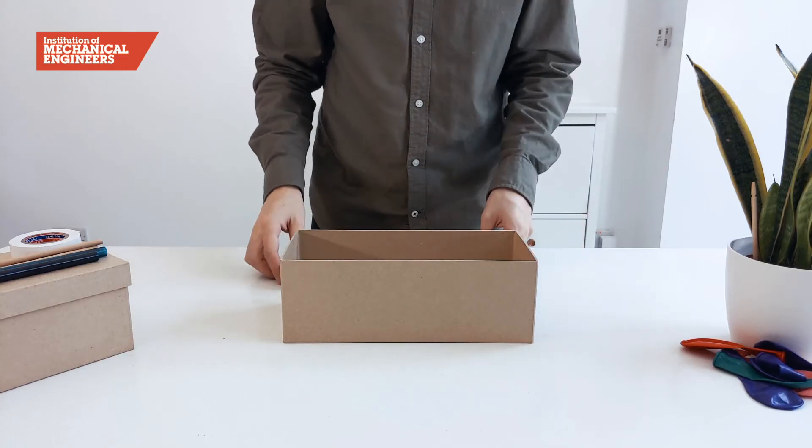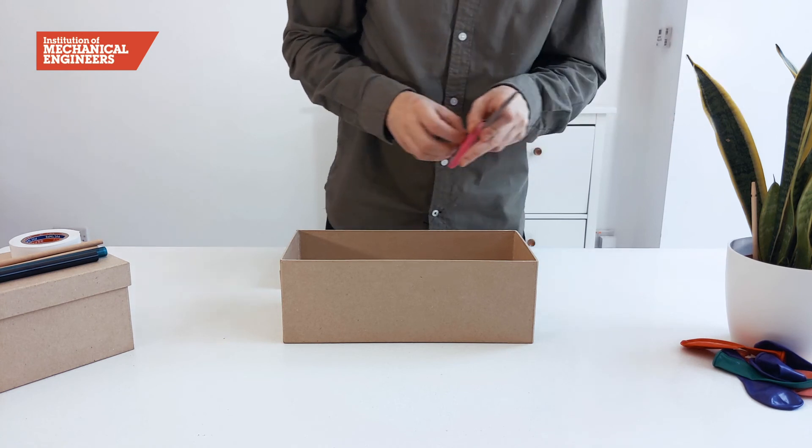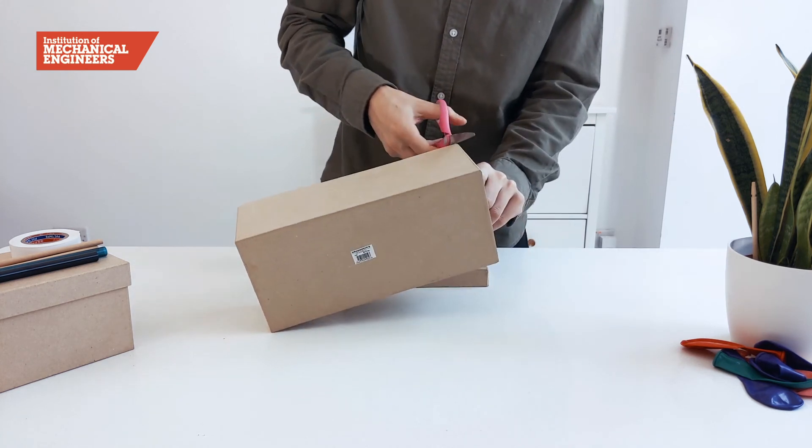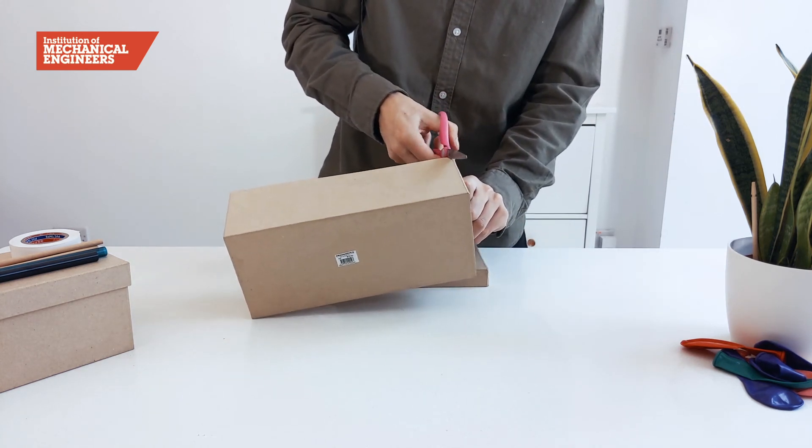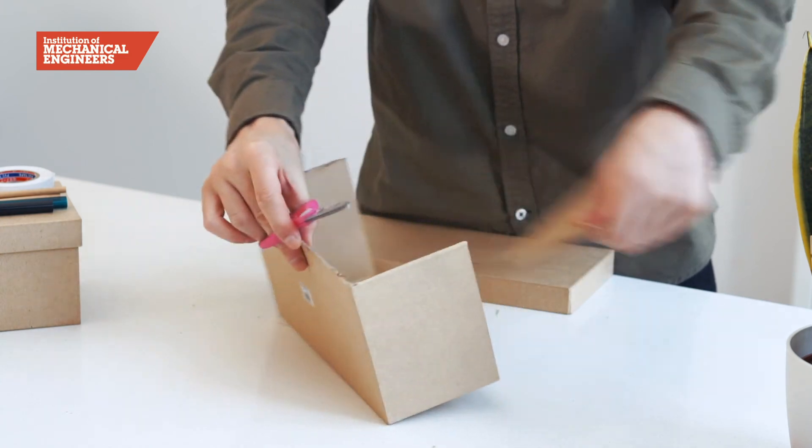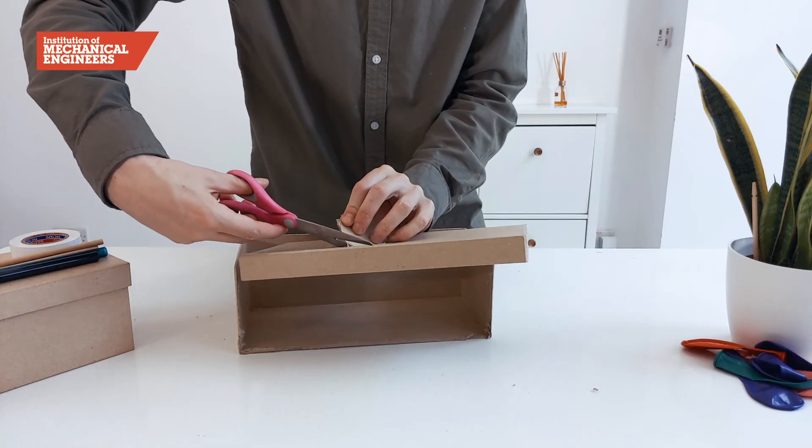Finally use a shoe box to house the pump so that it can easily be connected to the lung model. First cut off one side of the box then cut a hole in the top the same diameter as the jar.